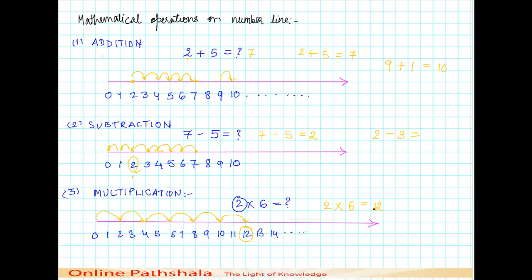We do know what is the answer of 2 by 6 is equal to 12, but this is just to depict the multiplication operation using the number line. This is what we have discussed about the number lines.